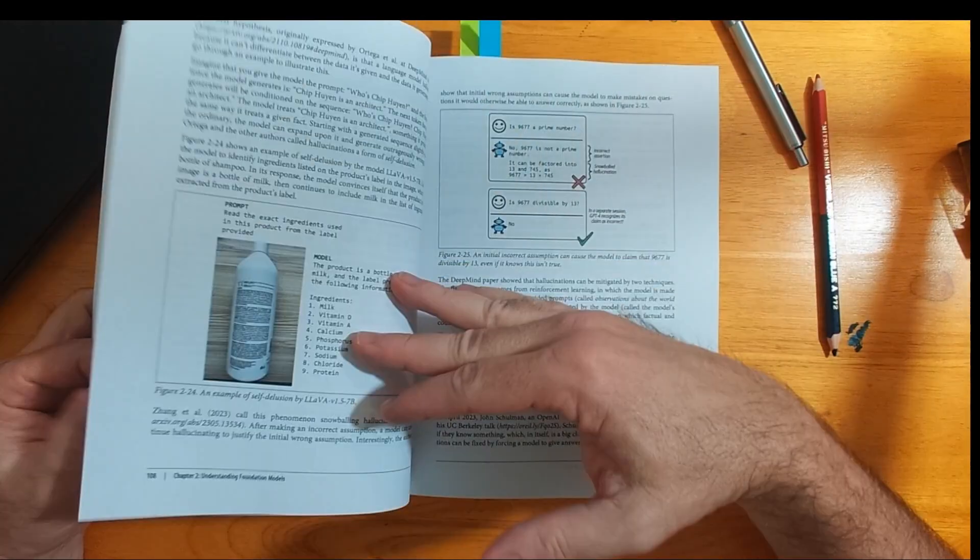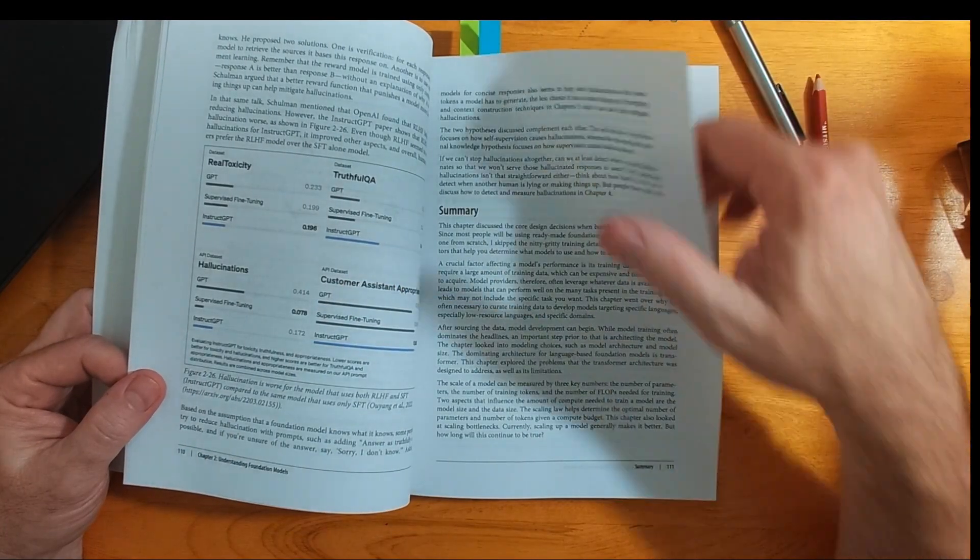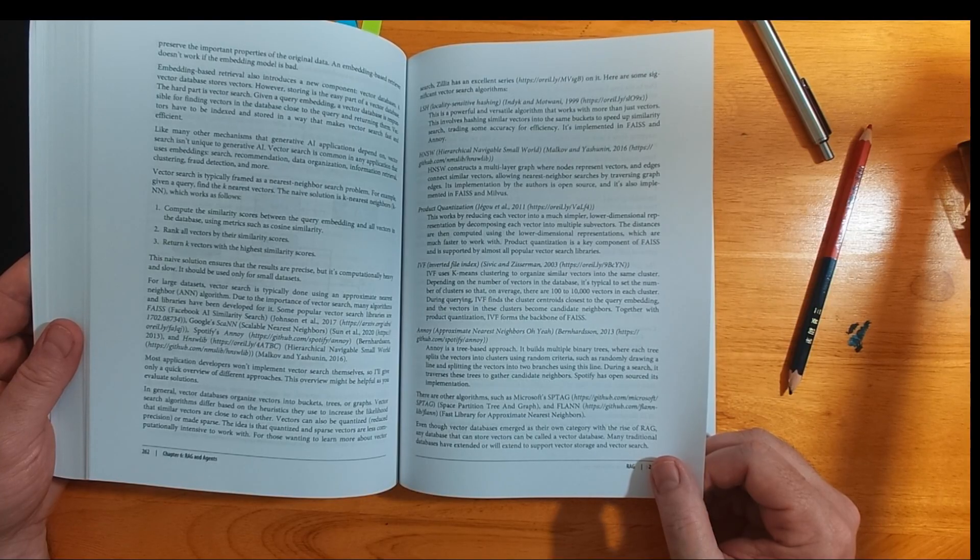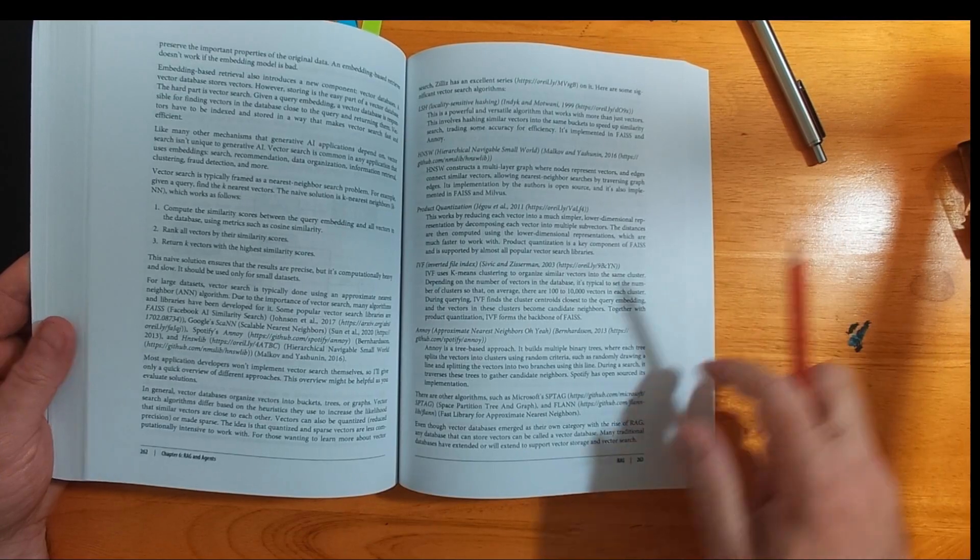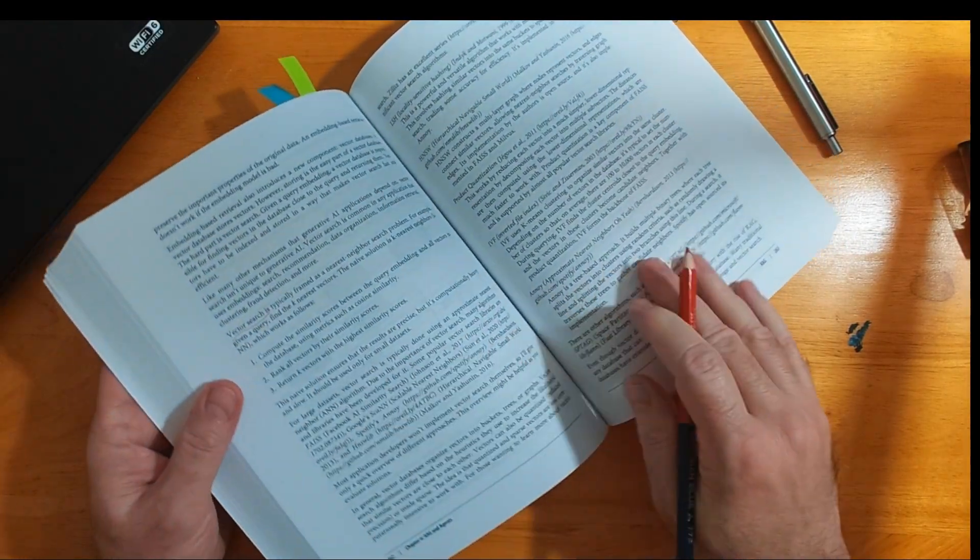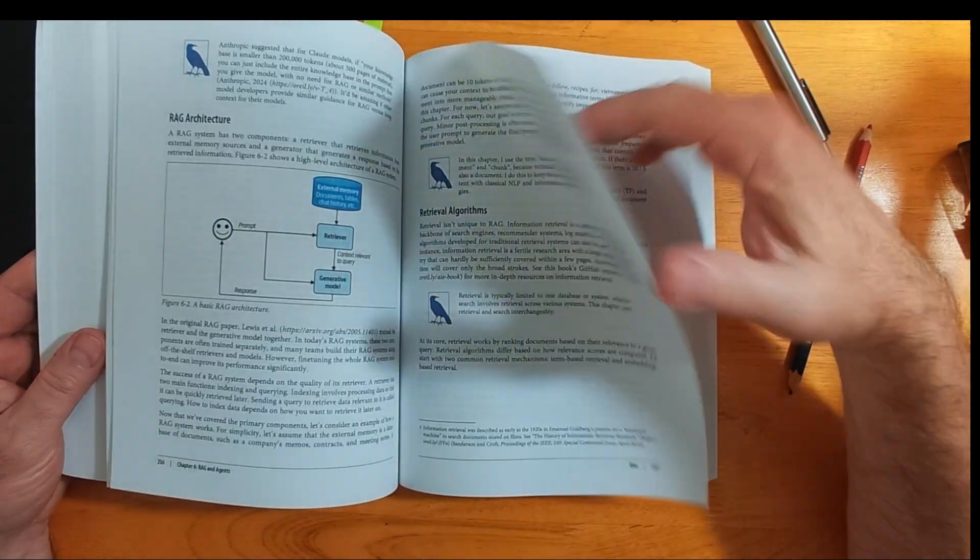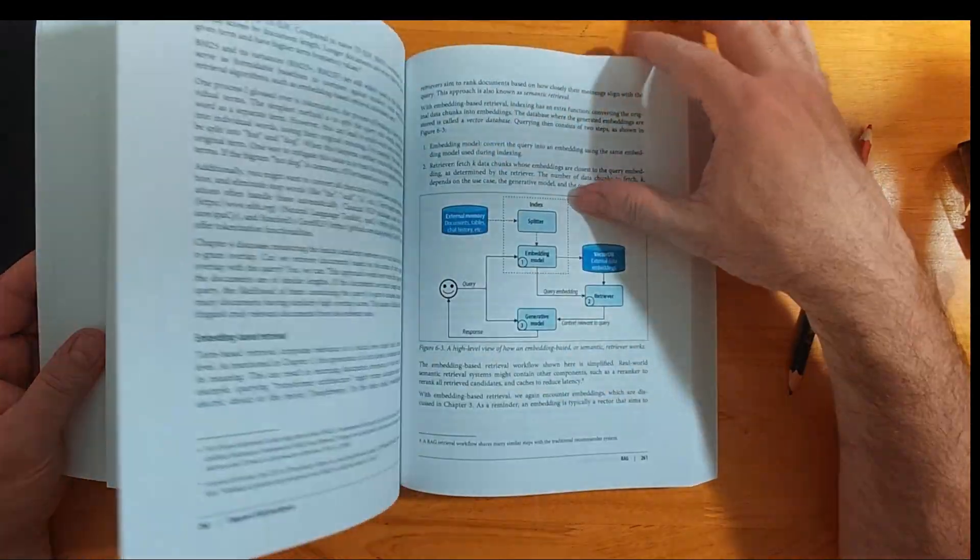What's a context window? You need to know that. Chip explains it on page 218. Be sure you have a basic understanding of context windows. There's a lot written about that. Chapter six, RAG and Agents. I think of those as two different things. They could have been separate chapters, but it's already a 500-page book.